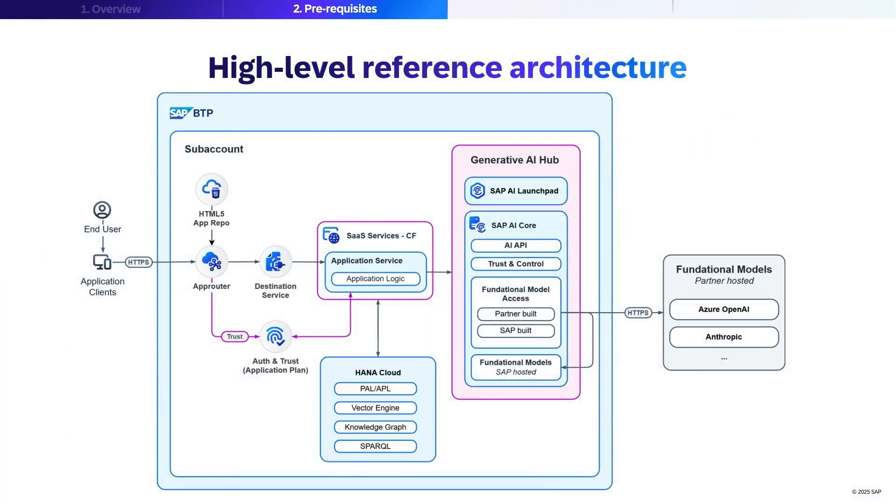Let's look at how all the SAP components come together for knowledge graph powered retrieval augmented generation on SAP BTP. End users access the application through a secure HTTPS channel. The requests pass through the SAP BTP subaccount starting with authentication and trust management using BTP native identity and authorization services. The application logic sits inside of SaaS or cloud boundary services connected to the rest of the SAP landscape.